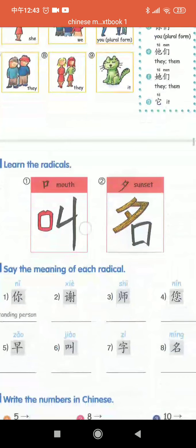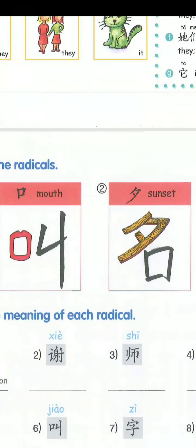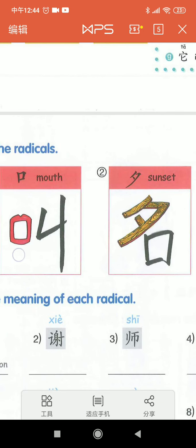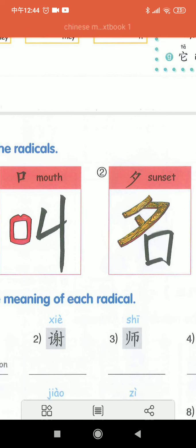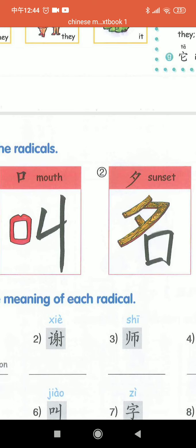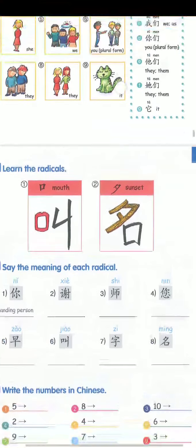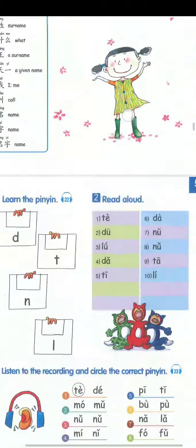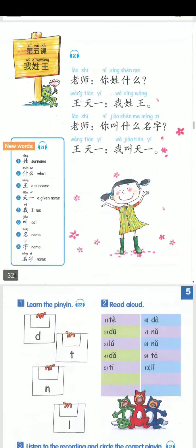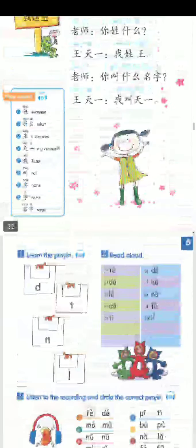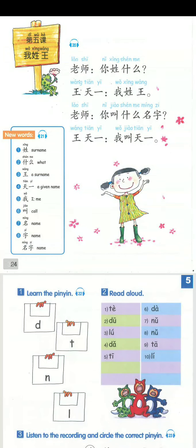Now look at the radicals. 叫 has a mouth radical. 名 has a sunset radical. Great — these are names, and how to speak to each other: how to say others' family names, full names, given names, or nicknames. Thank you.